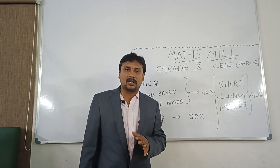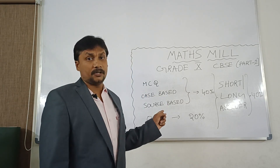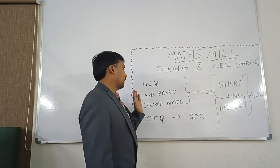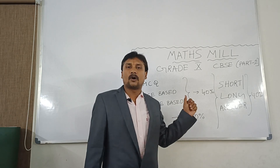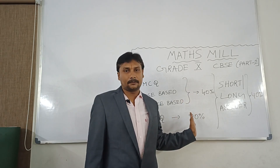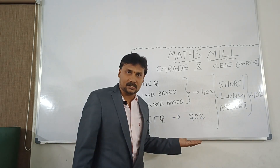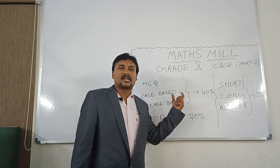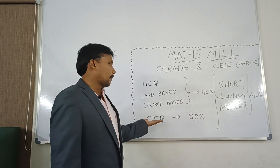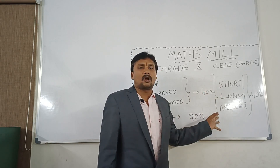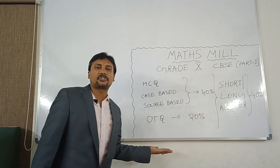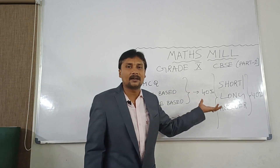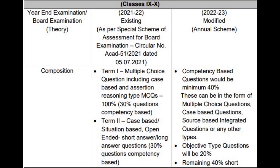The expected question paper pattern may be like this — it is expected. Once the CBSE board releases the original question paper pattern, if there are any modifications I will do a video. So first, MCQs and case-based and source-based questions — you may get 40% out of the 80 marks, that is 32 marks. Then OTQ, over-thinking questions, like case study or some other type of questions — that will come as 20%. And short or long answer questions you may get 40%, that is also 32 marks, and the remaining 16 marks from the complete examination.